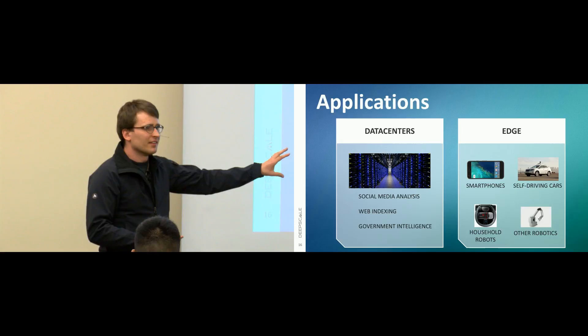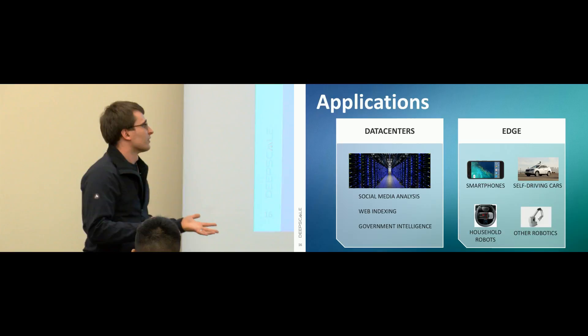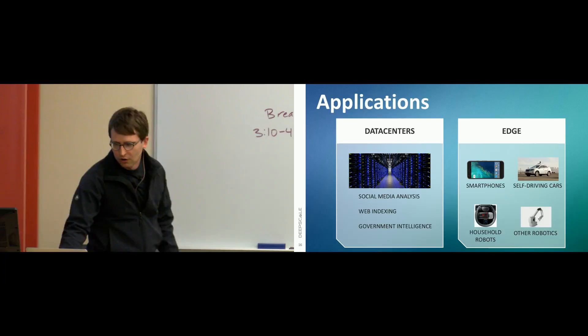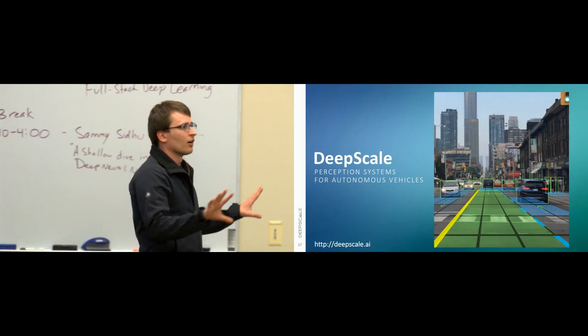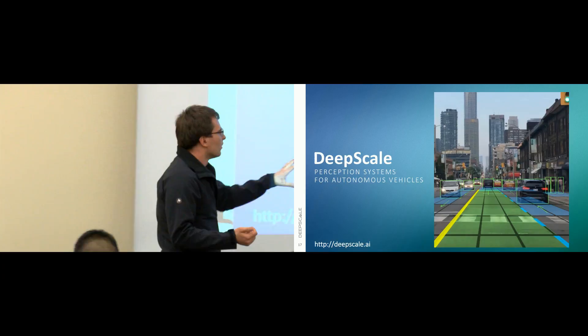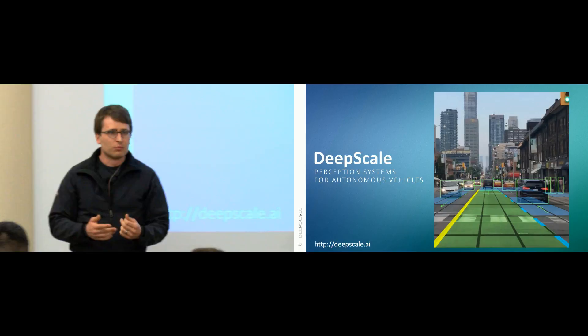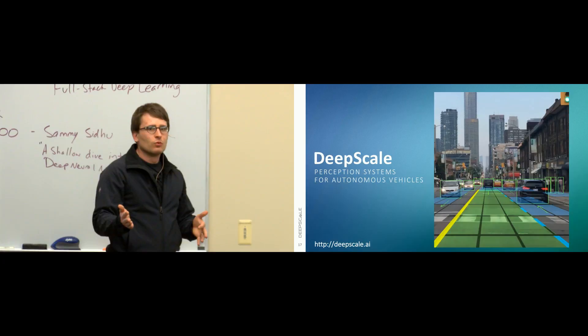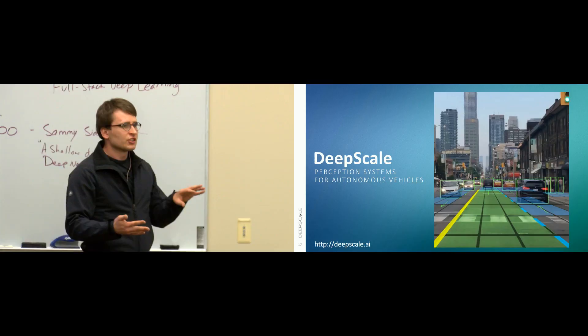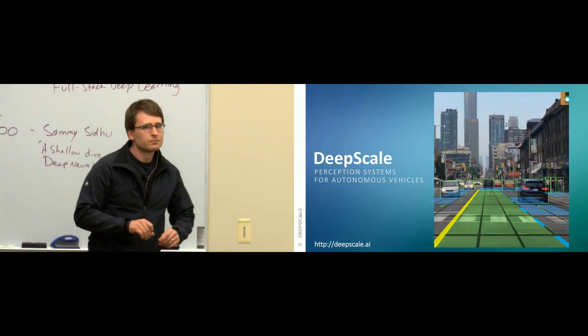At DeepScale, our favorite edge computing application is understanding the world around the car from the perspective of an autonomous or highly automated vehicle. We figure out where you can drive on the road, where the cars are, where they're going, and lots more. For all the reasons discussed at the beginning of the talk, whether you're using just cameras, cameras and LiDAR, or whatever — the best algorithms are almost always deep neural networks. If you open the trunk of most prototype self-driving cars in Silicon Valley, it looks like a big server rack.